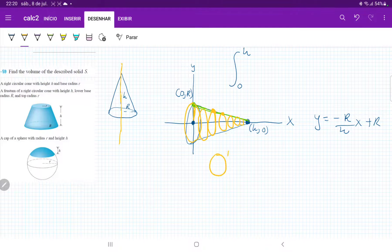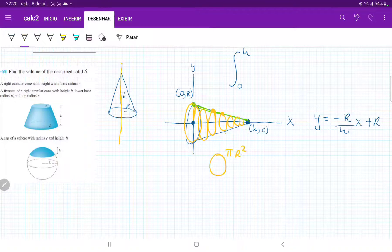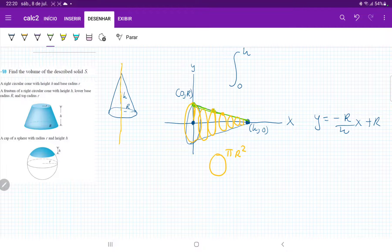And so basically, the area of each circle is just basically pi r squared, where in this case, the radius is the height of the function. So because it is the height, it's just the value of this function right here.